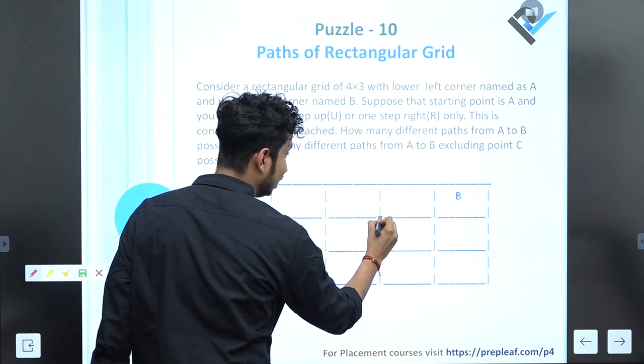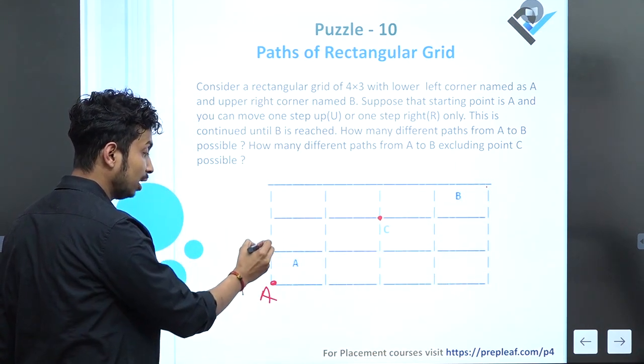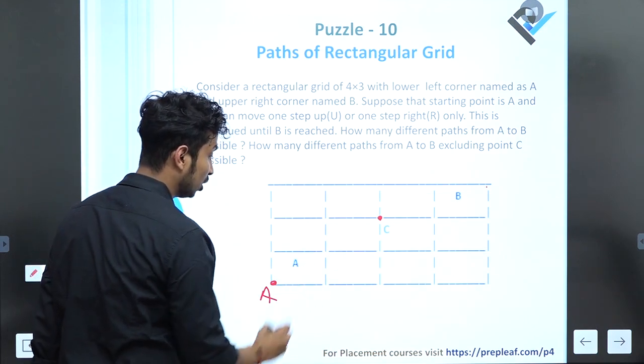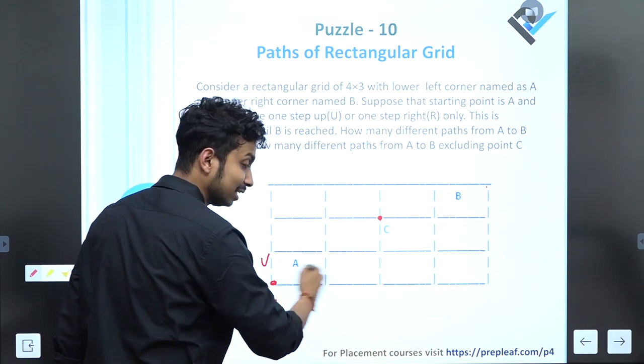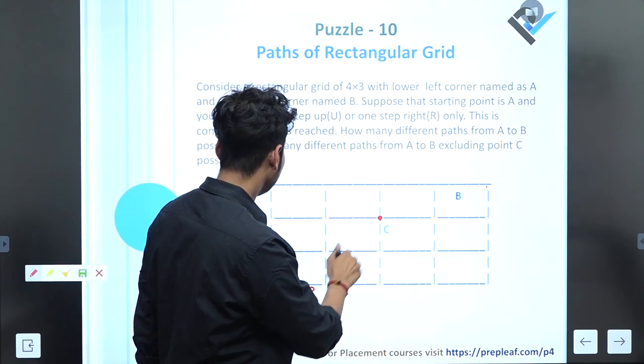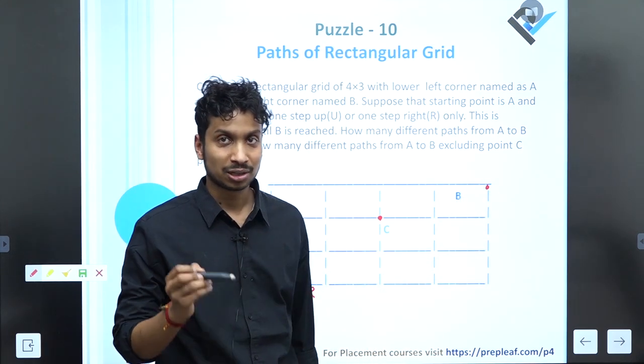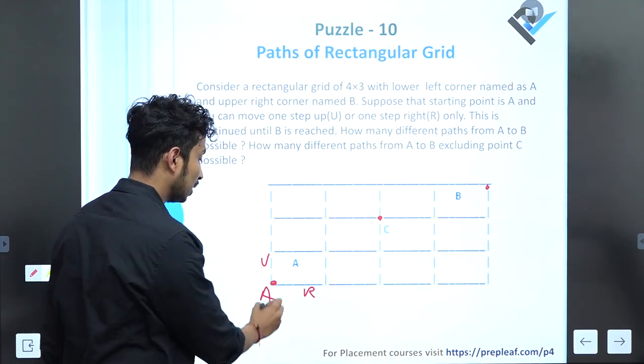A person can either move upward one step or move rightward one step. The question is: a person wants to reach from point A to point B, what is the total number of ways?